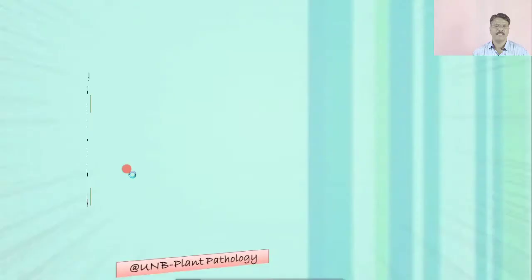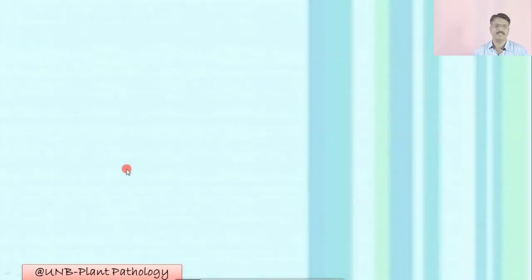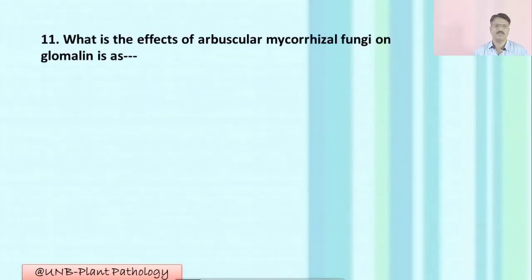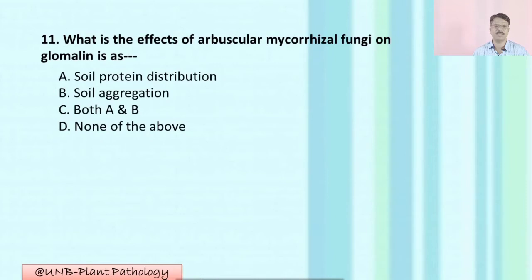Question number eleven: What is the effect of arbuscular mycorrhizal fungi on glomalin? A: soil protein distribution; B: soil aggregation; C: both A and B; D: none of the above. The correct option is C: both A and B — meaning soil protein distribution as well as soil aggregation.